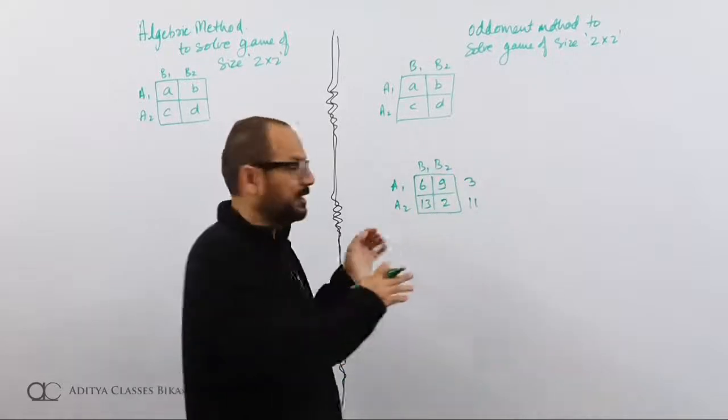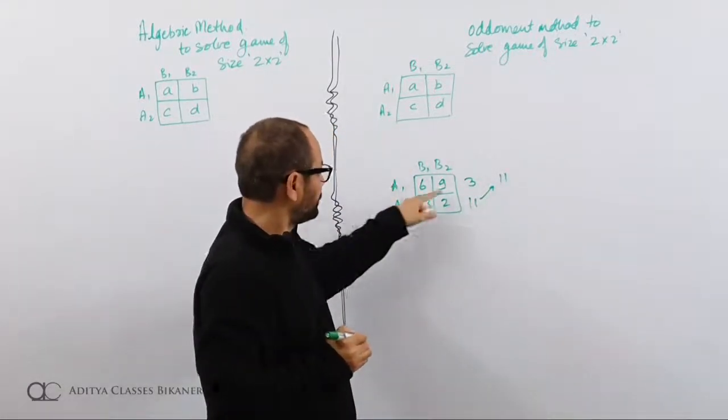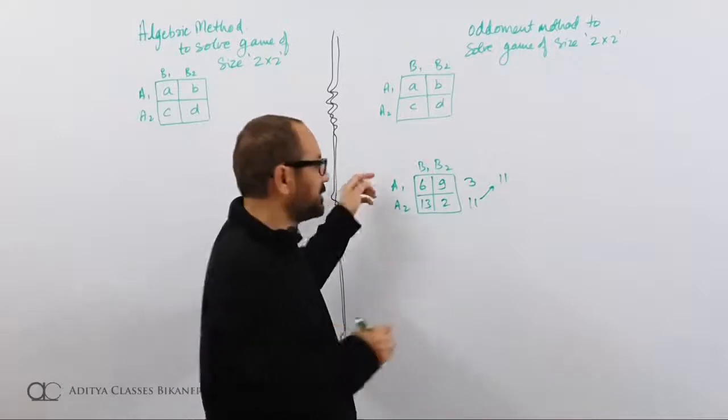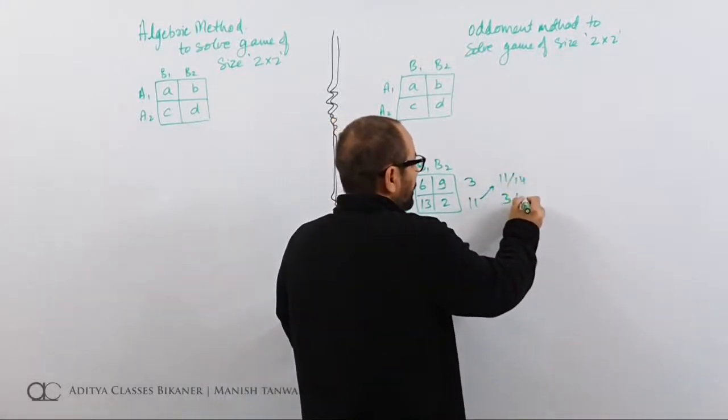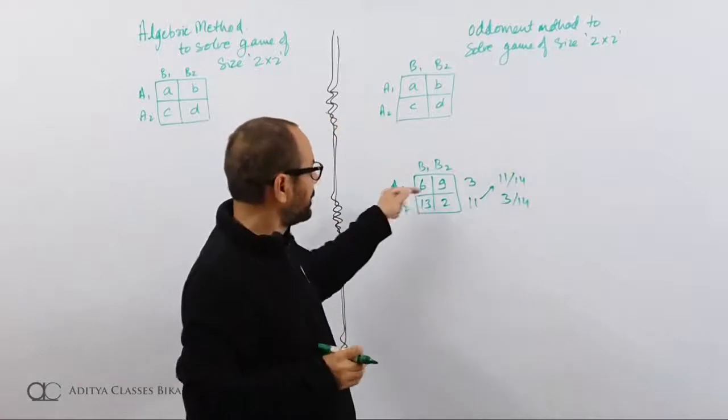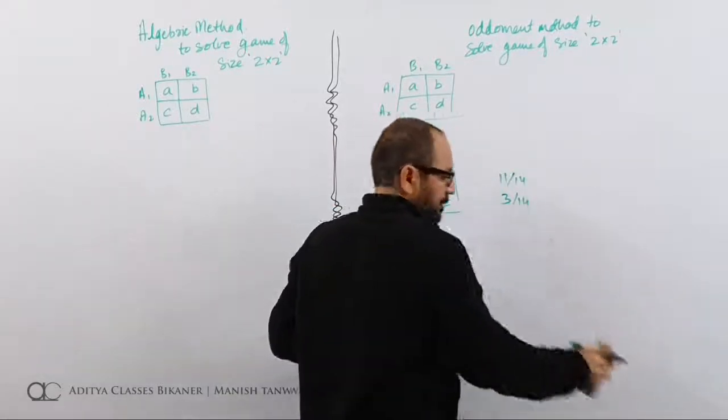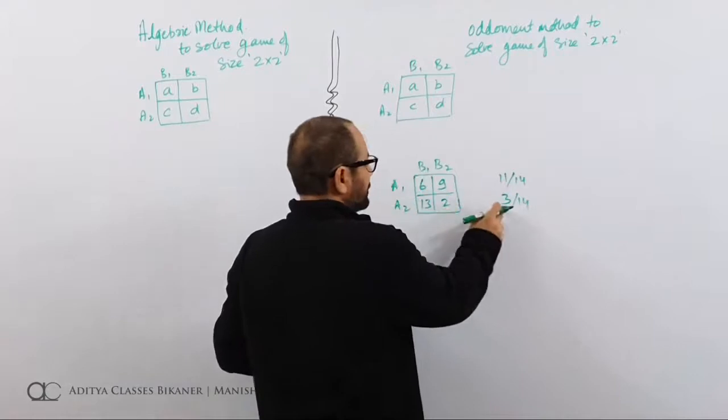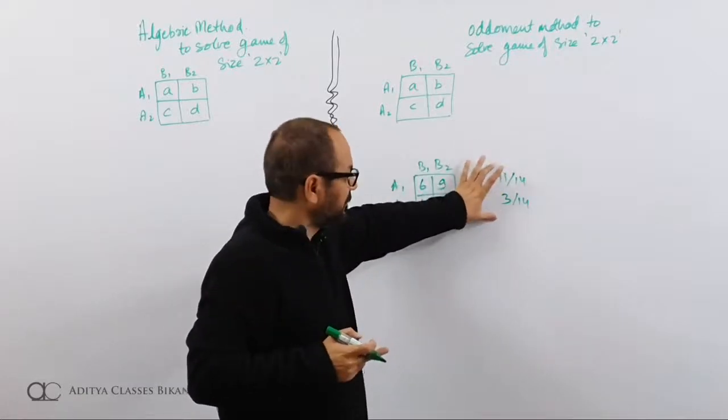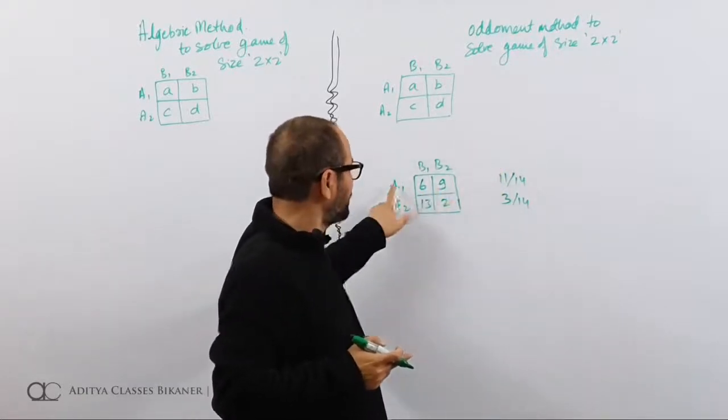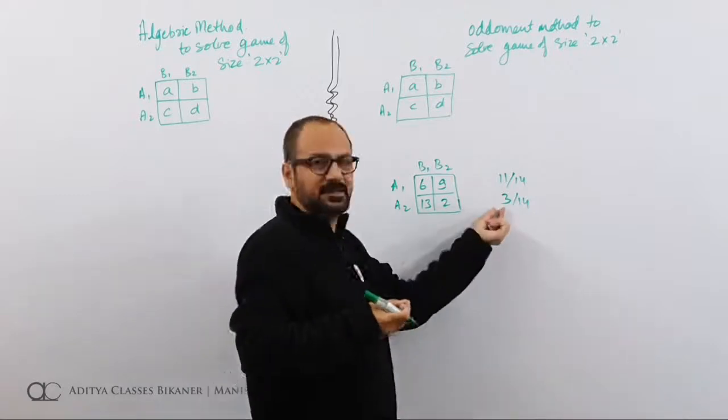Now, A2 is performing very badly. It is losing 11. So we switch these. If you remember the oddment method, we switch these and A2 is only as good as how badly A1 is performing. 3. And then we divide by 11 plus 3, 14. 11 by 14, 3 by 14. These are the odds. If you remember the oddment method, we take difference of 6 and 9 and write it over here. This step was just to understand. We take differences, 9 and 6 difference 3, 13 and 2 difference 11, it is put against opposite. So 11 and 3, 11 plus 3 is 14. Of these 14 games, 11 times I am taking first. Why am I taking this strategy 11 times? Because it is giving me lesser loss. Why am I taking this strategy only 3 times? Because there is a high likelihood that it might give me a loss of 11.